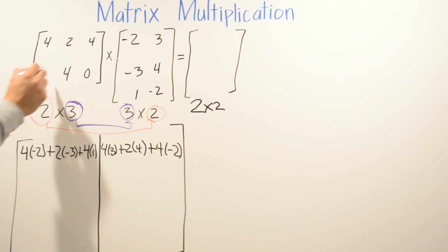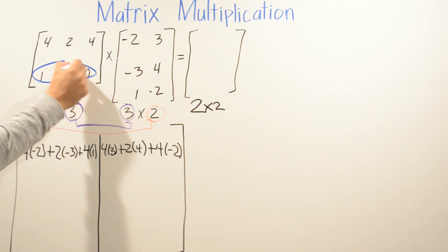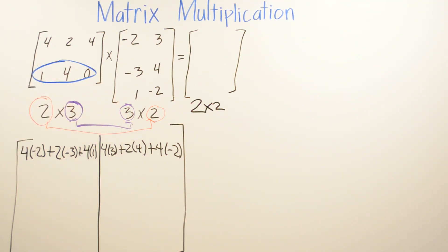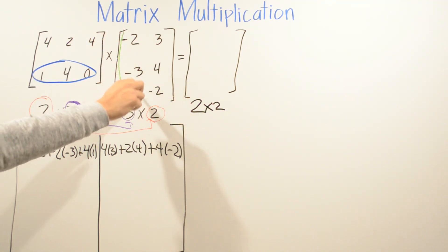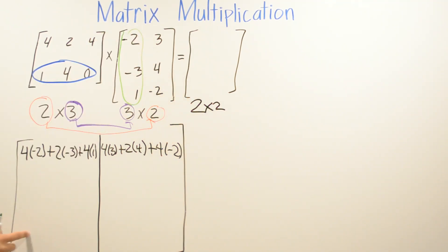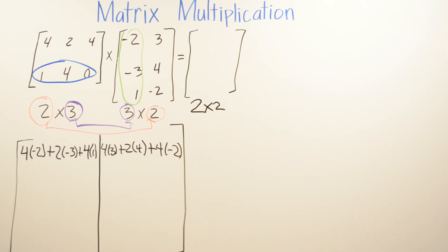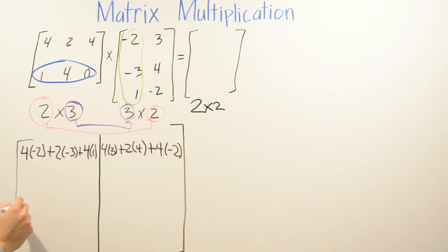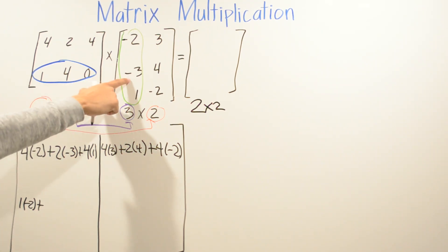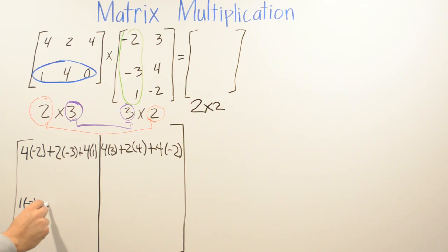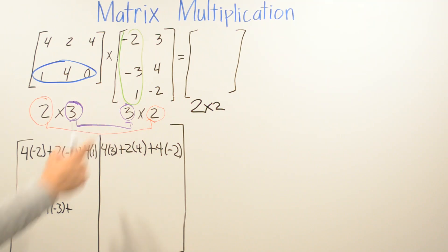Now we move to the second row. To get the bottom-left corner, we multiply the second row of the first matrix by the first column of the second matrix: 1 times negative 2, plus 4 times negative 3, plus 0 times 1.